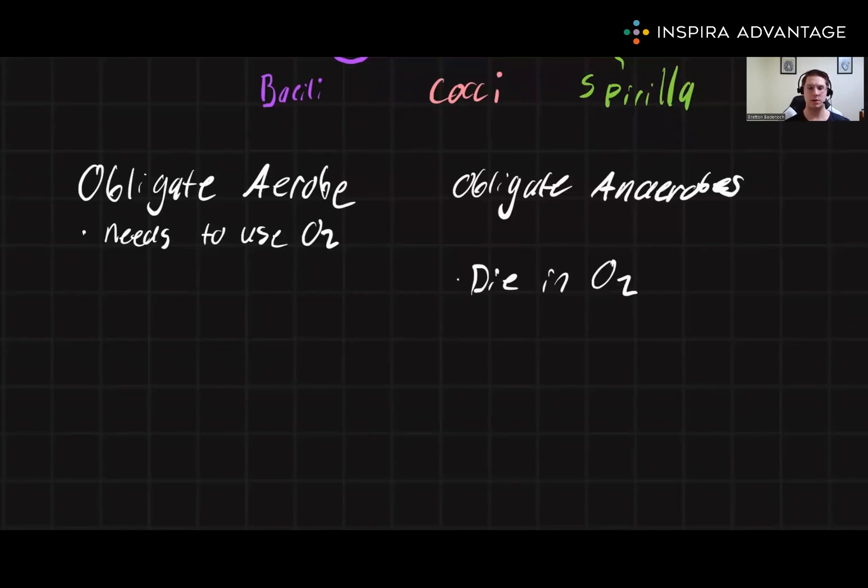Again, the naming scheme helps tell us what is going on here. Obligate means obligated, and an means not, which is a really important thing to key into. An always means not. So we can translate this into obligated to not use air. If it does, it dies.